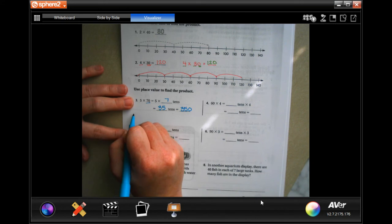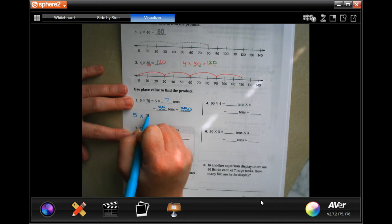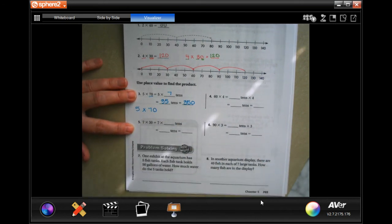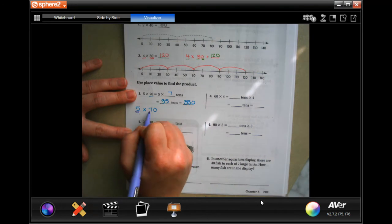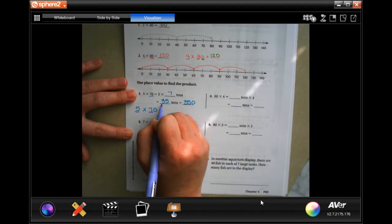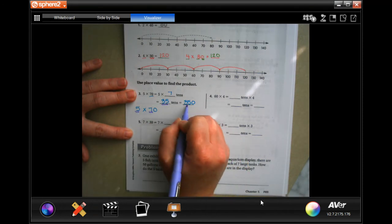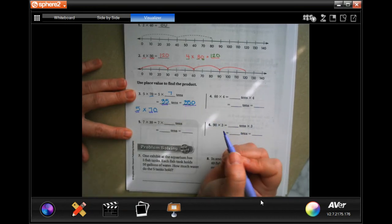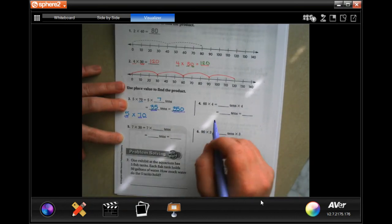So all it's saying is like I showed you last time, 5 times 7 is 35, and then tack that 0 on the end.